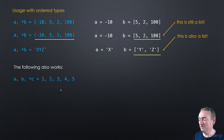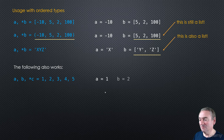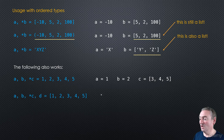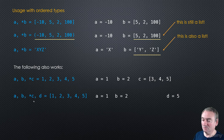You can also unpack more than just the first element. You can say A, B, *C to get the first two elements separately and the rest in C. Or you can add elements after the star: A, B, *C, D will put the first element in A, the second in B, the last in D, and everything in between into C.